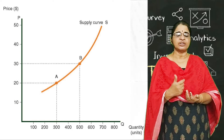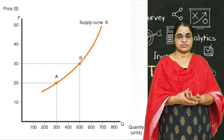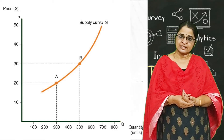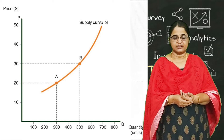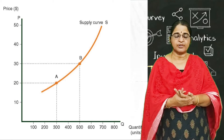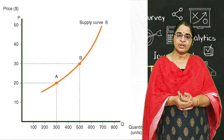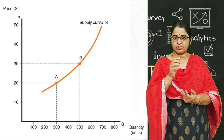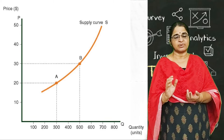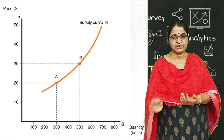When price increases to Rs. 20, the quantity supplied also increases. At Rs. 20, seller A supplies 200 units, seller B supplies 100 units, and seller C supplies 300 units. The total quantity supplied — that is the quantity supplied by A plus B plus C — is the market supply. This is known as the market supply schedule.